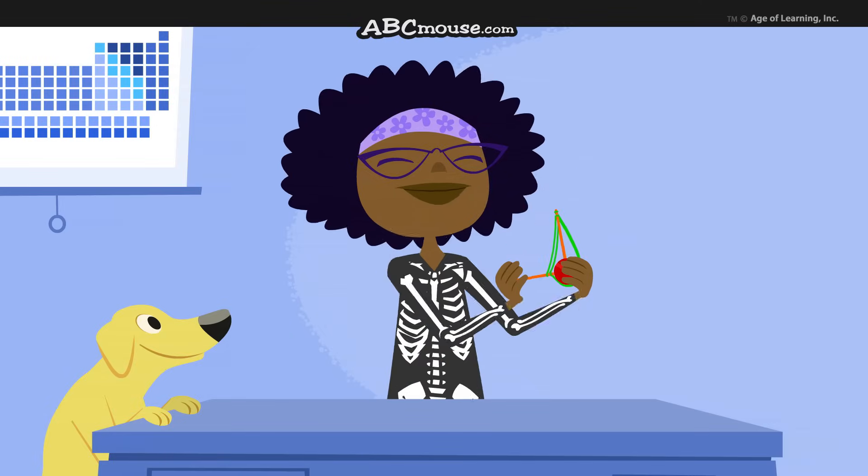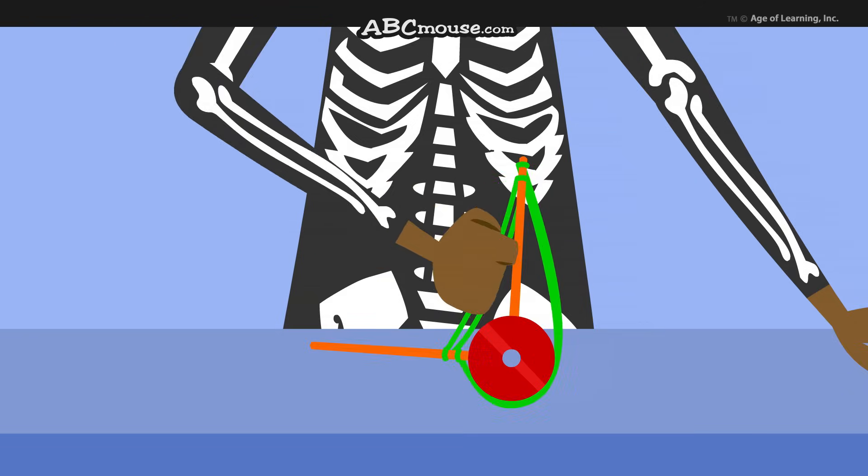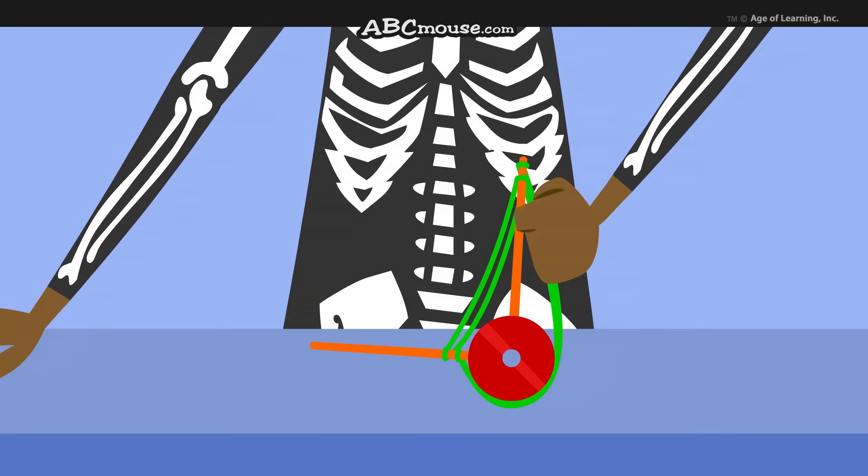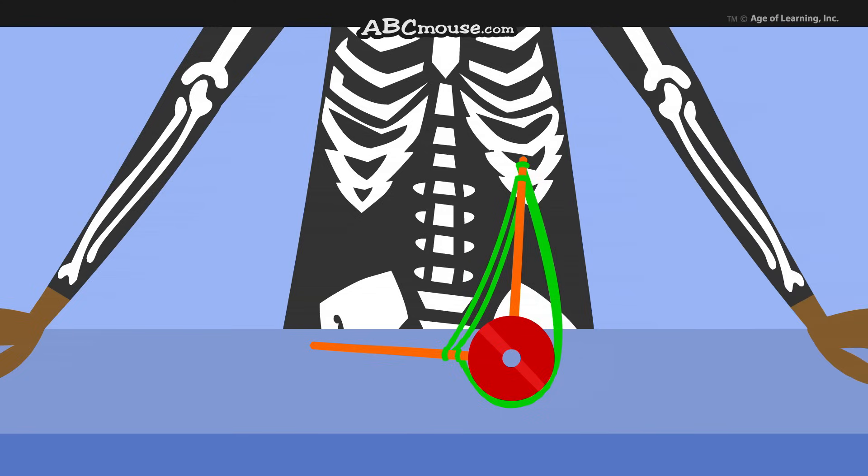Time to test our model. Notice how when I tighten up the rubber band on this side, the bones move this way. And when I tighten the rubber band on the other side, the bones move the other way. That's how our muscles and our skeleton work together.